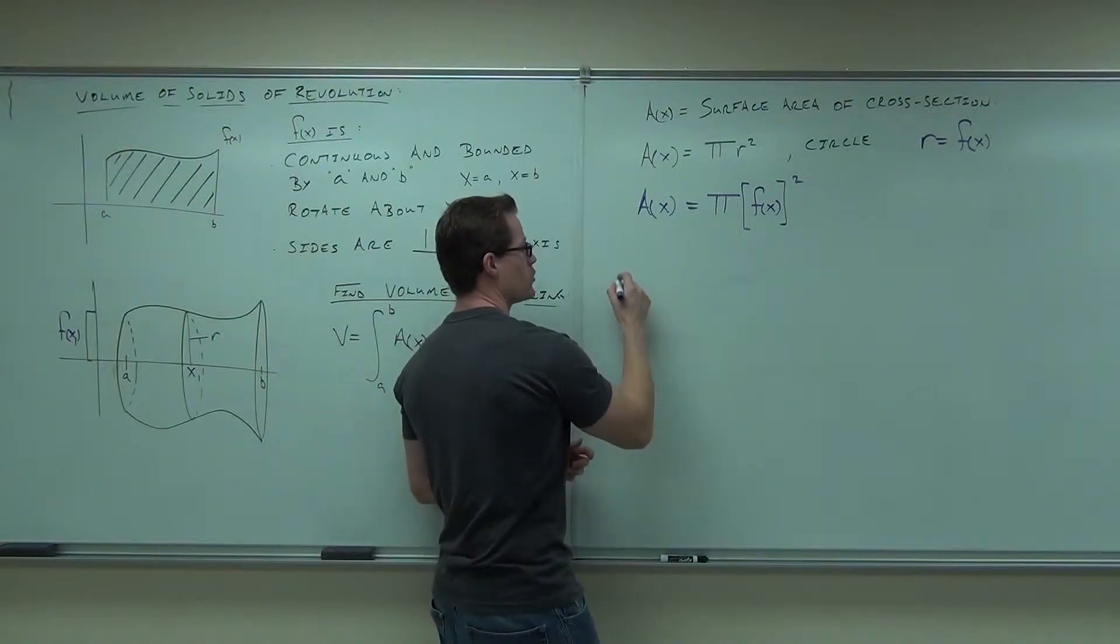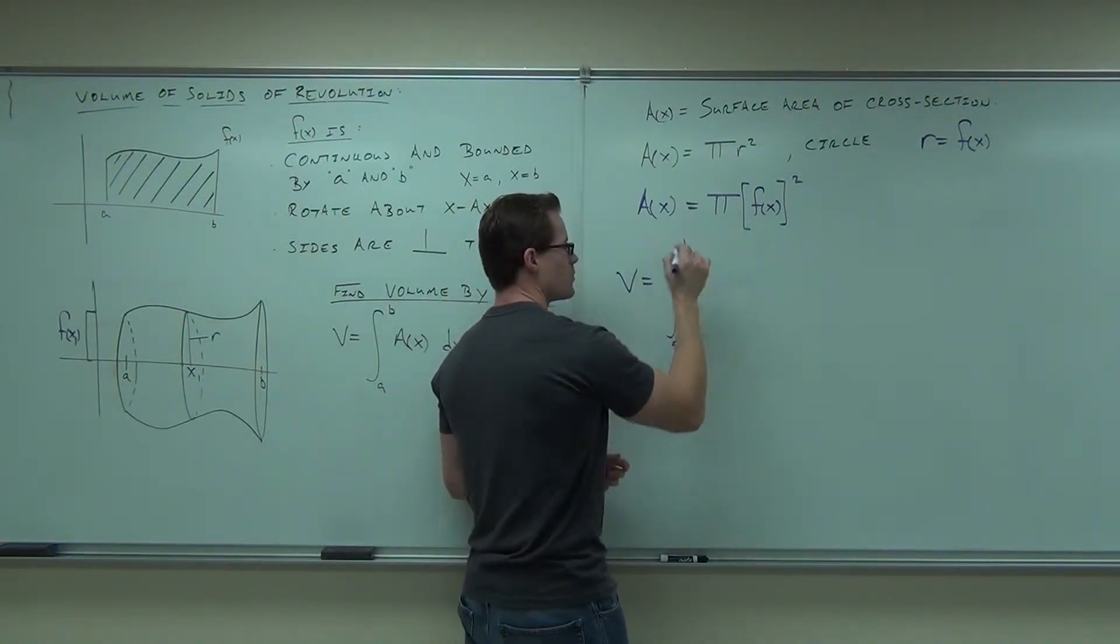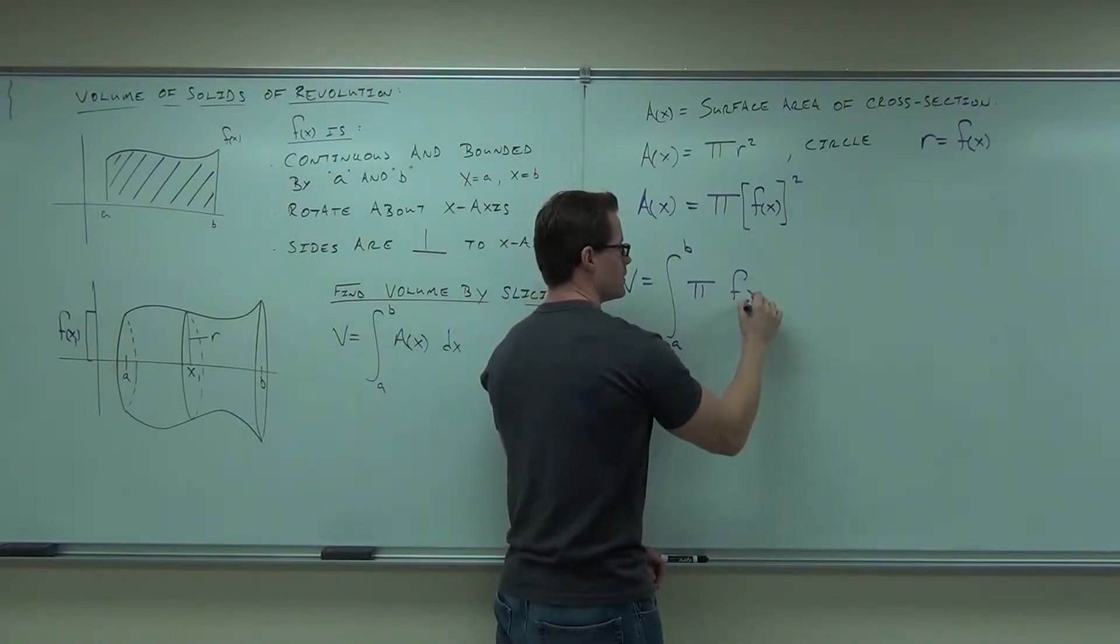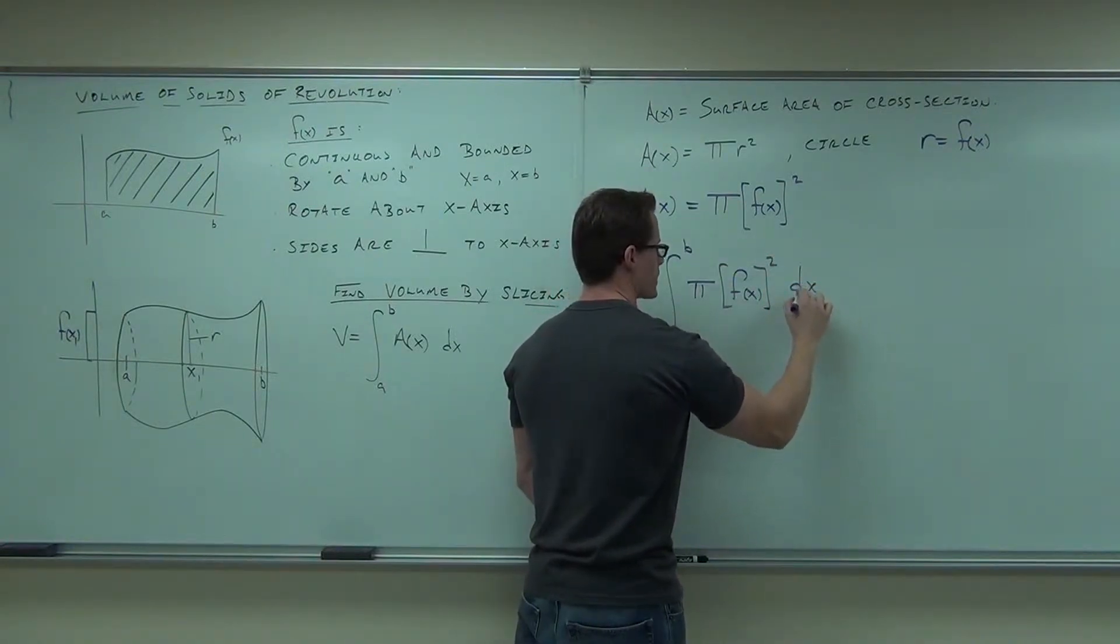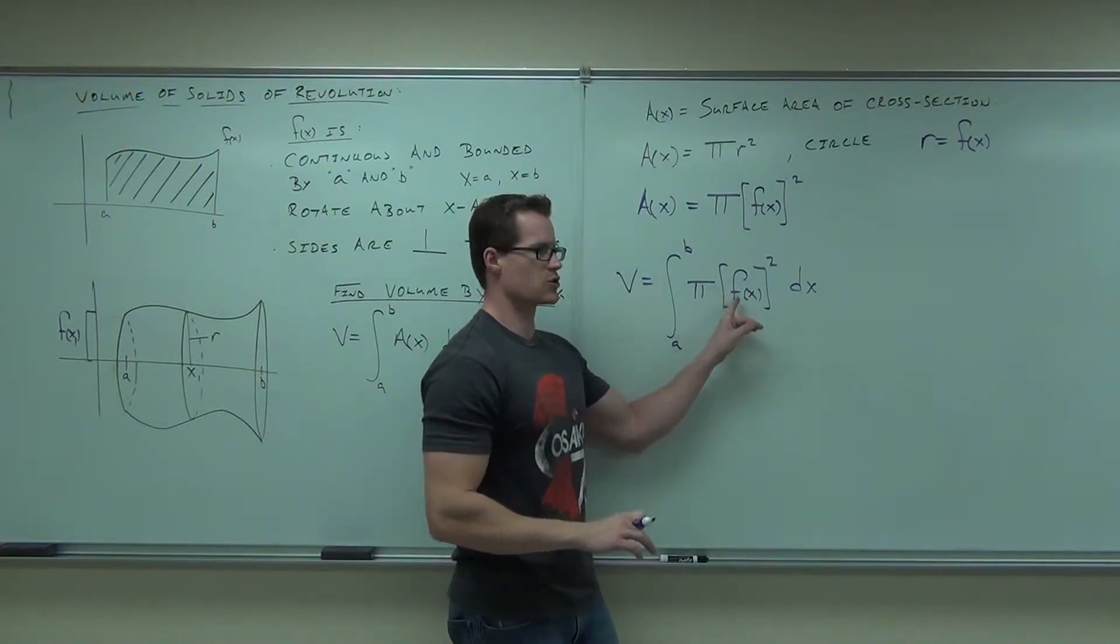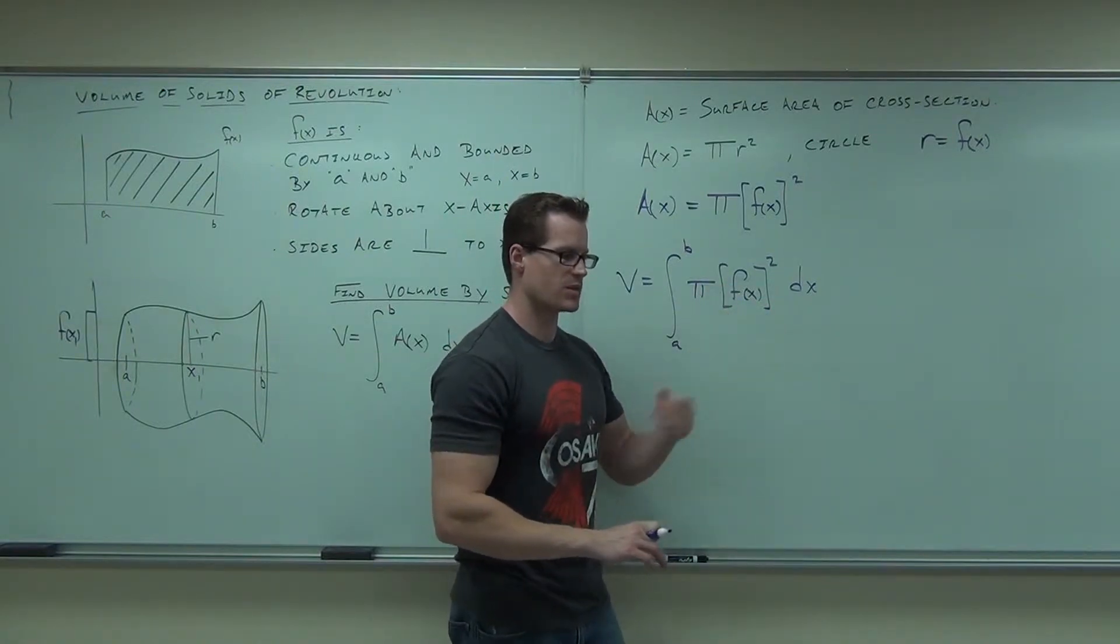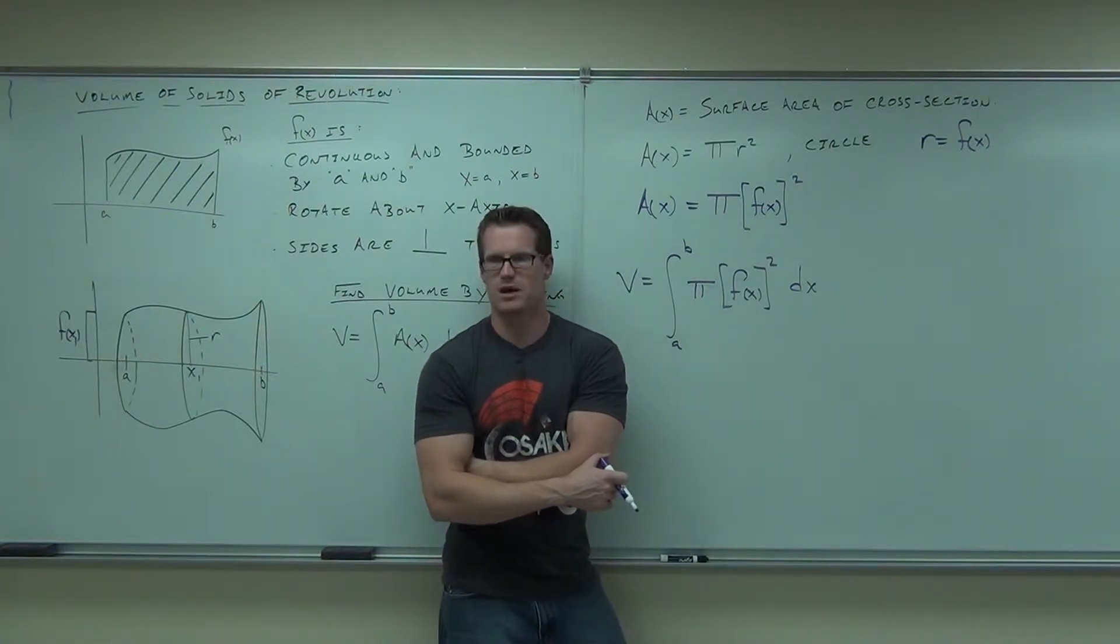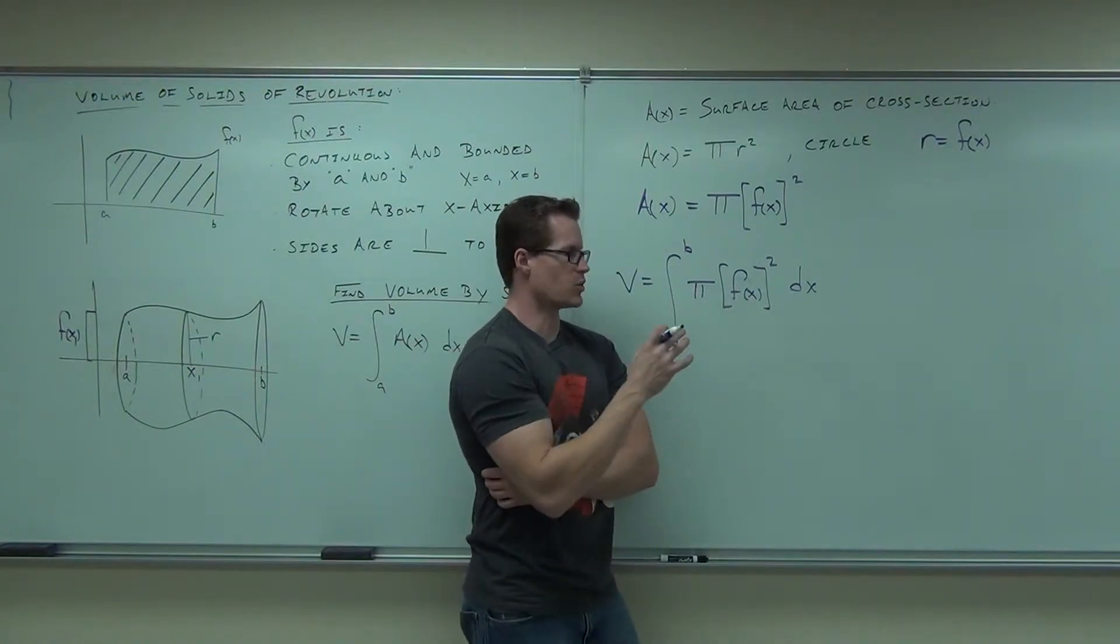What it says is, in order to find the volume by slicing, you go from where the interval starts to where the interval stops, of π [f(x)]² dx. And it says, you know what? It's not even that hard. It says you take your function, you plug it in, you square it, and you multiply by π. Now, if someone tell me something about the π, what can you do with the π? You can always bring it out because that's a constant, and that will always be there.